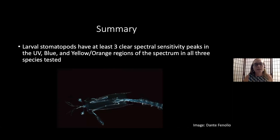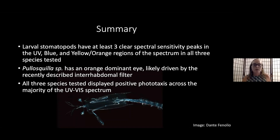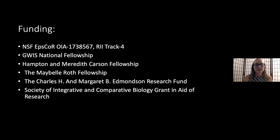In summary, larval stomatopods have at least three clear spectral sensitivity peaks — one each in the UV, blue, and yellow-orange regions — found in all three tested species encompassing two of the three main stomatopod superfamilies. Pullosquilla has an orange-dominant eye likely driven by the recently described intra-rhabdomal filter. All three species displayed positive phototaxis across the majority of the UV-to-visual spectrum, showing both physiological and behavioral responses. Thanks to lab members Tara, Mirai, Sophia, and Gracie, Dr. John Cohen for electrophysiology help, and all funding sources.